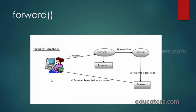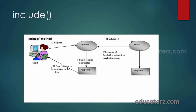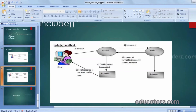The difference between forward and include: in the forward method, the request is sent to the first servlet, and when forward is encountered, control goes to servlet 2, which generates the response and sends it directly back to the browser. In the include method, the request is sent to servlet 1, and when include is encountered, control goes to servlet 2 and the response of servlet 2 is included in the response of servlet 1, which finally sends the combined response back to the client.